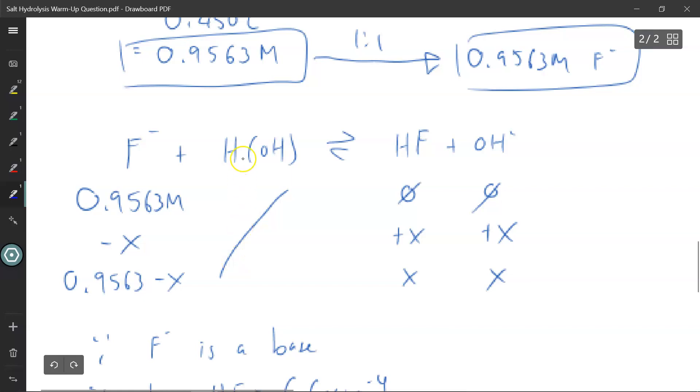I don't care about the concentration of water because water is a pure liquid. It has no effect on Kb. And it's going to be 0 and 0 because the fluorine hasn't had a chance to react with the water yet. The reaction must go forward. So I'm going to have minus X, plus X, plus X. It's all 1 to 1 to 1 to 1 ratio. So at equilibrium, 0.9563 minus X for fluorine, X for hydrofluoric acid, and X for hydroxide.